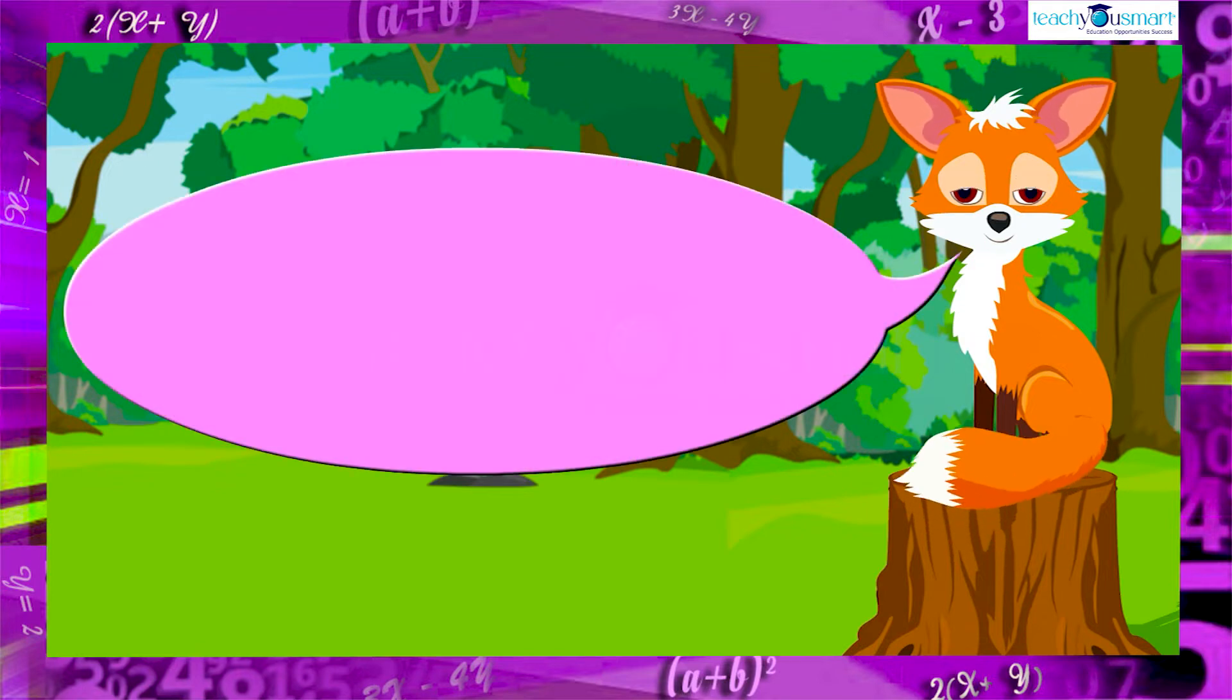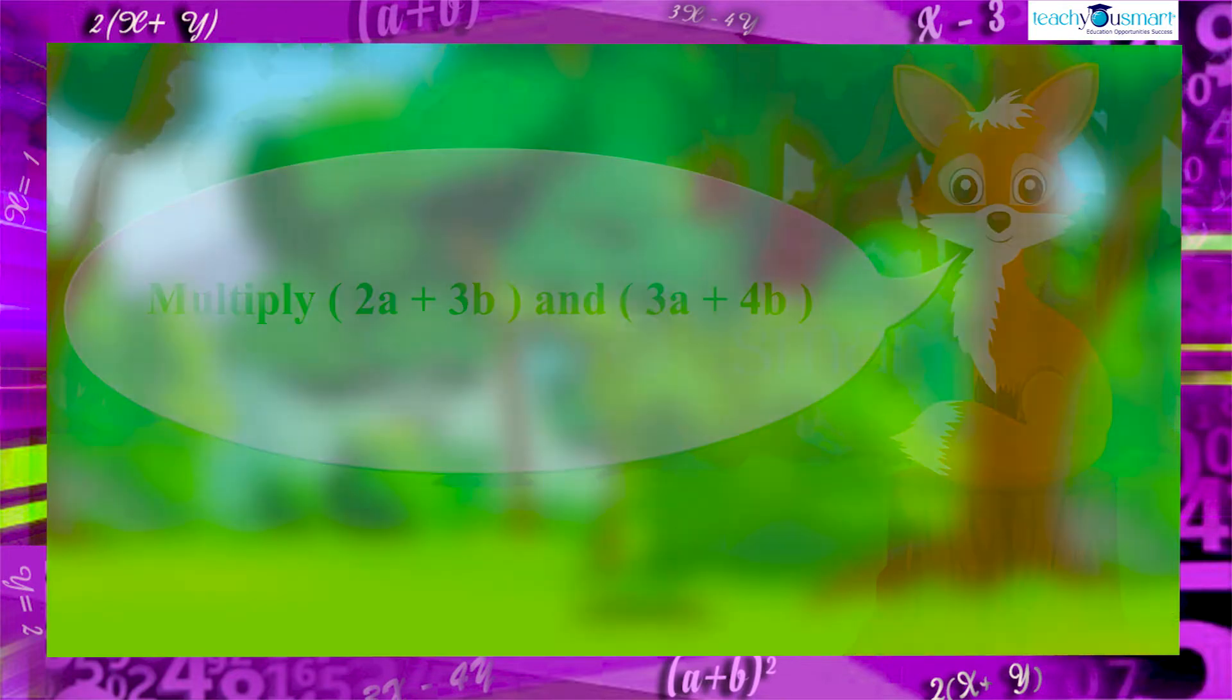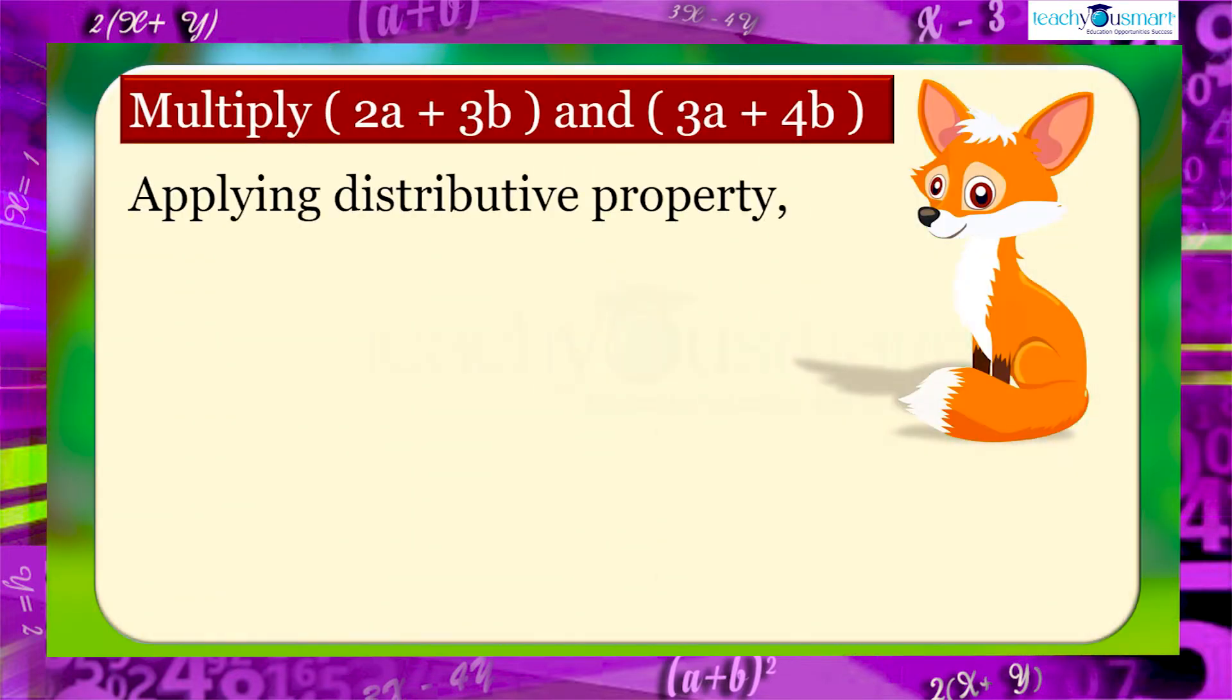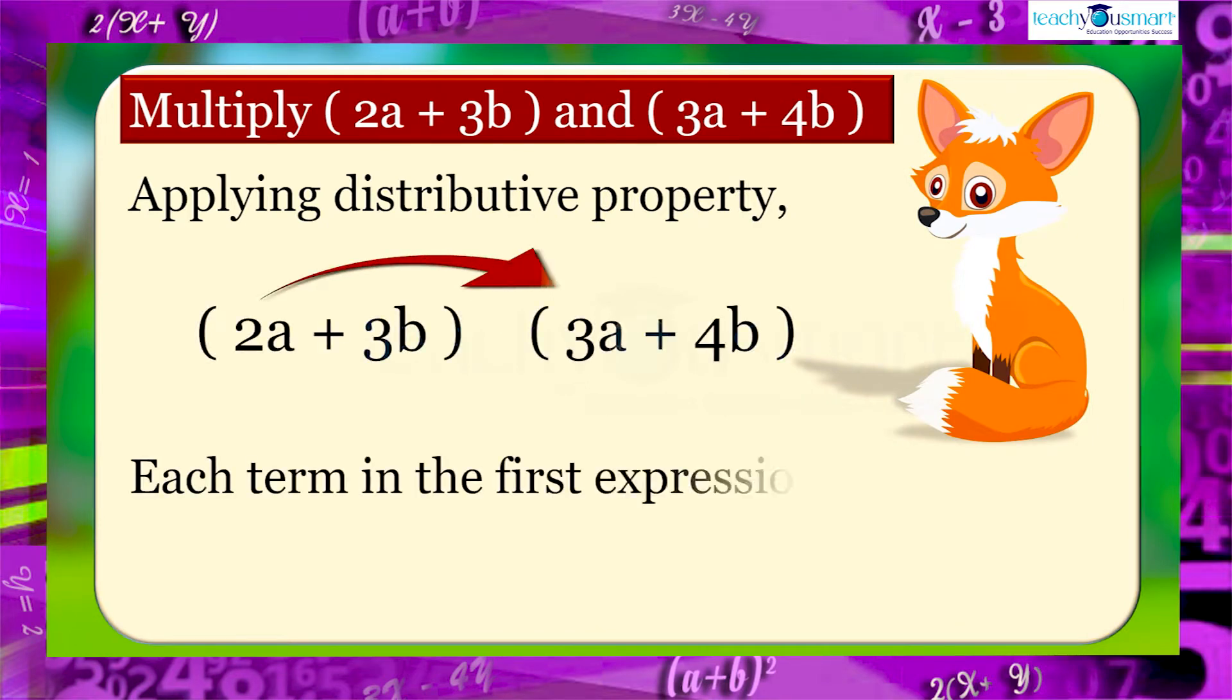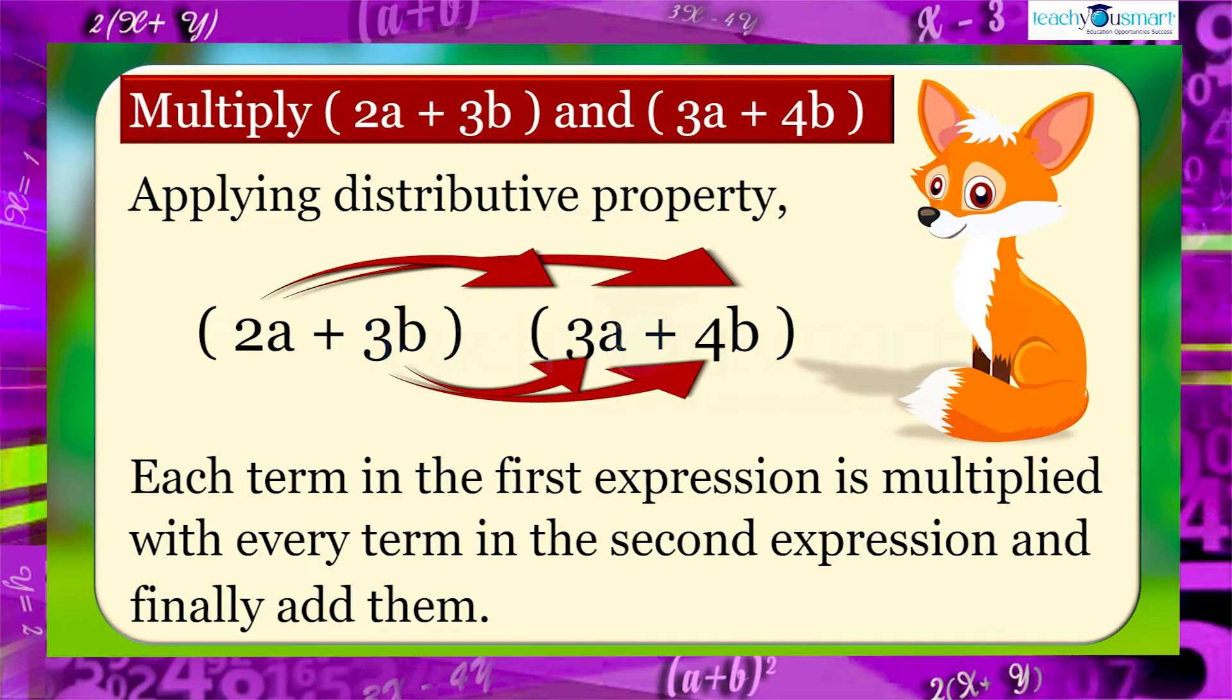Multiply the two binomials (2a + 3b) and (3a + 4b) by applying distributive property. Each term in the first expression is multiplied by every term in the second expression and finally add them.